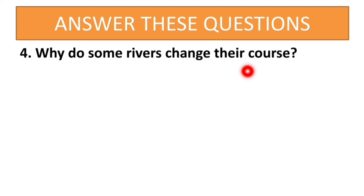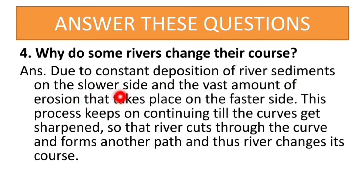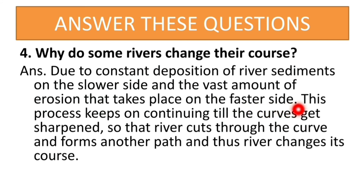Why do some rivers change their course? Due to constant deposition of river sediments on the slower side and vast amount of erosion that takes place on the faster side, this process keeps on continuing till the curves get sharpened, so that the river cuts through the curve and forms another path. Thus the river changes its course. From one side it gets eroded and from the other side it gets deposited — this makes the change in the course.